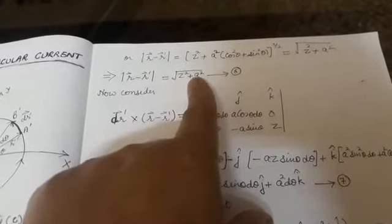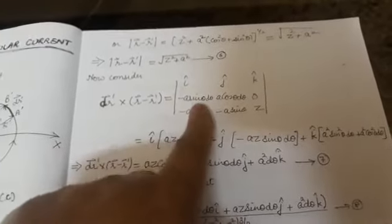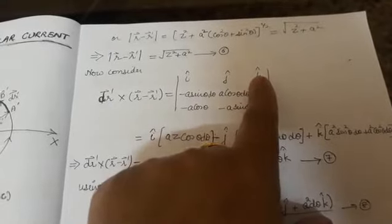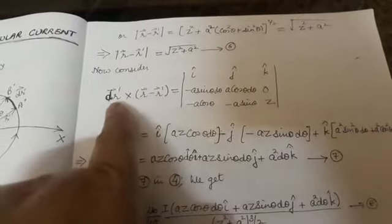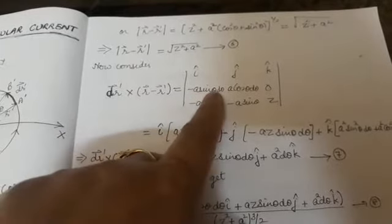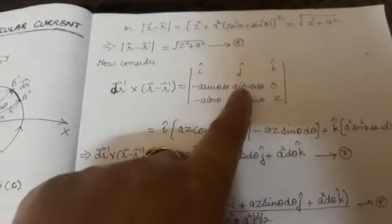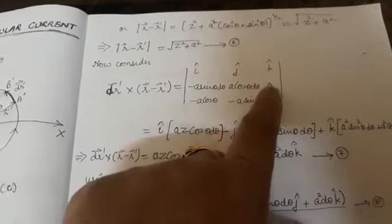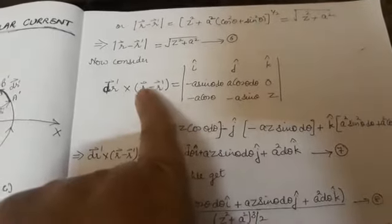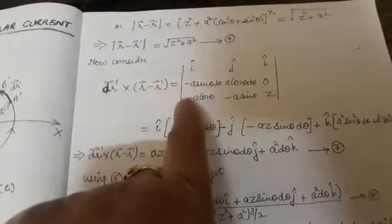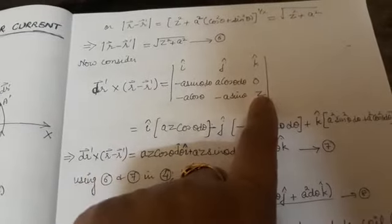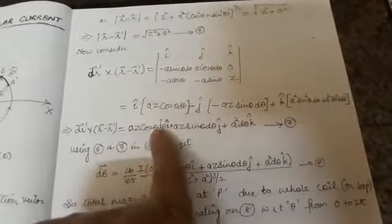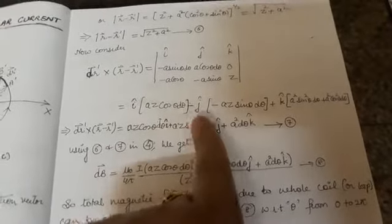The magnitude |R − R'| comes out to be √(z² + A²). On expanding the determinant I get equation number 7. Substituting equation 7 and equation 6 into equation 4 (Biot-Savart's law), I obtain the expression for the small magnetic field dB at point P due to the small current element I·dR'. This is equation number 8.